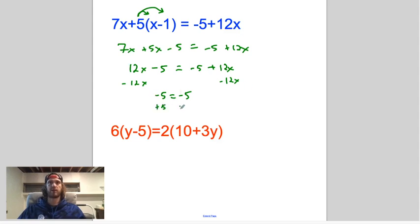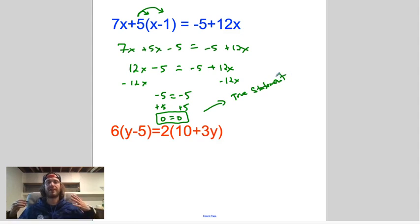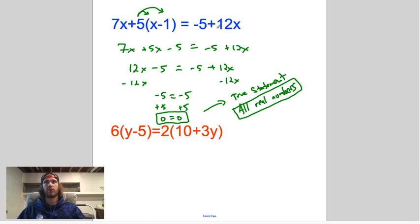Well, I better get those 5s together. I'll add 5 to both sides. 0 equals 0? Yes, it does. Negative 5 equals negative 5? Yes, it does. Okay, when you find yourself getting a true statement, what's the solution? What is the number that makes this equation true? And the answer is all real numbers. All real numbers make the equation true. If you don't believe me, pick any number and plug it in right here, and it will make the equation true.